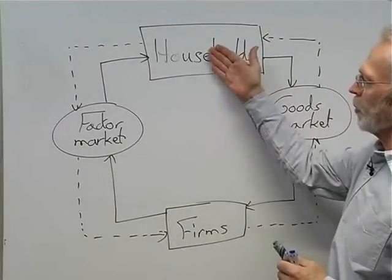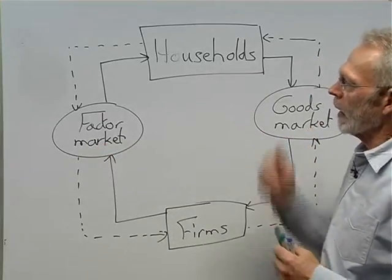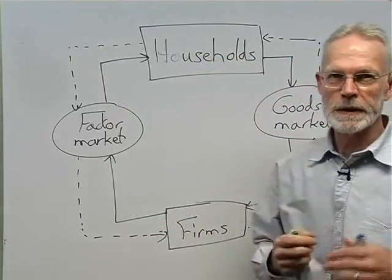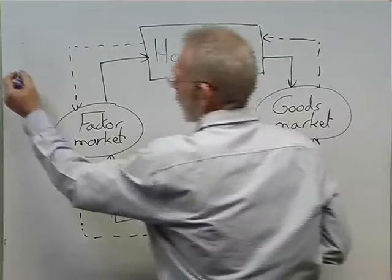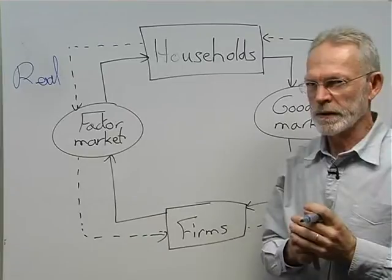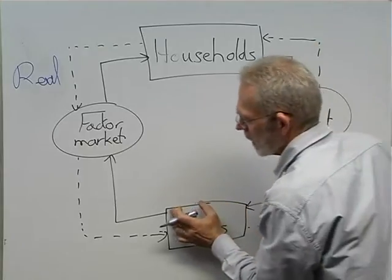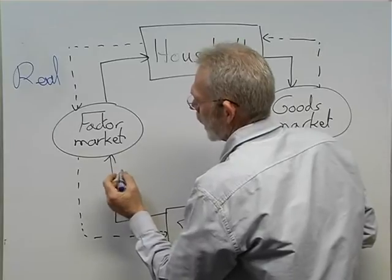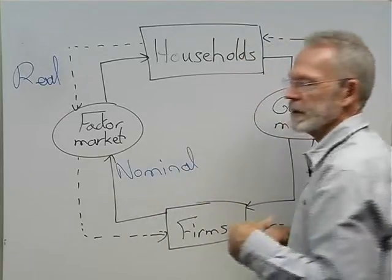We've seen the interaction between households and firms on the factor market and the goods market. There is a flow of factors of production from households to firms — we call this a real flow: flow of labor, capital, and so on. In return, households receive an income, so there's a flow of income from firms back to households. This income flow is called a nominal flow — wages, salary, and so on.